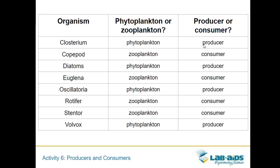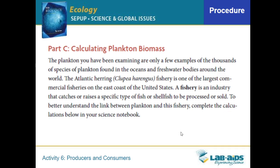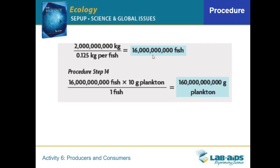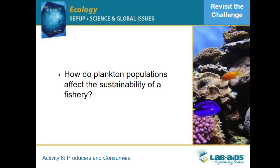Remember that phytoplankton are the producers and zooplankton are consumers, and the structures they have function to allow them to play that role in the ecosystem. A fishery — an industry that catches or raises fish or shellfish to be processed or sold — has sustainability that depends on plankton. To understand the scale: for Atlantic red herring, there are an estimated 16 billion fish in this one fishery. If you consider how much plankton they need, every day they require 160 billion grams, or 160 million kilograms, of plankton. Any slight change in that would have a huge impact on the fishery, the local economy, the environment, and the sustainability of that ecosystem.